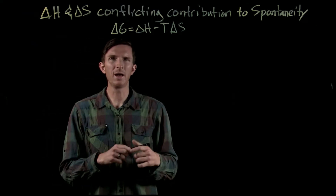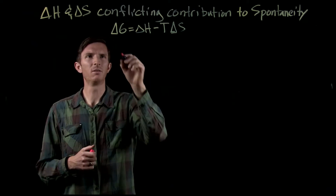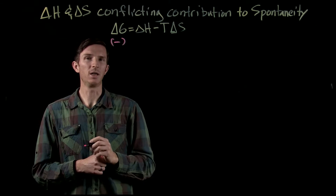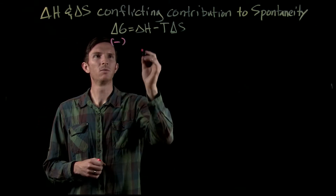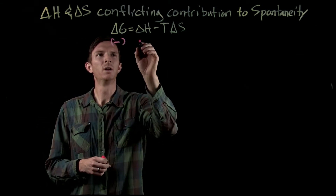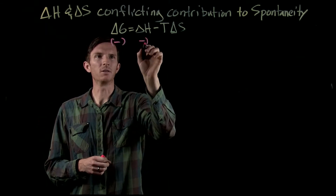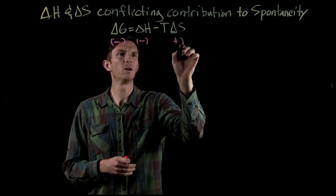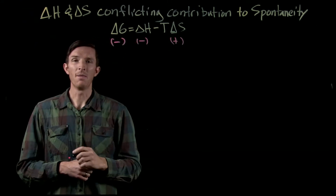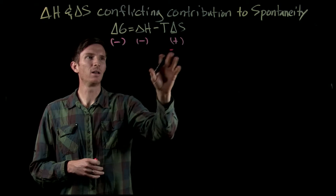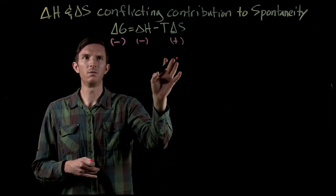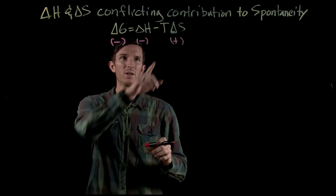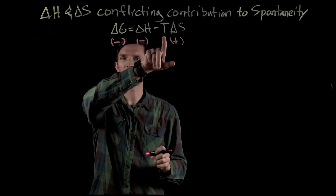So if we want to have a negative delta G — that would be a spontaneous process — that could happen if we have a negative delta H and a positive delta S. That means that no matter the temperature, our reaction is spontaneous because this is always a positive value.